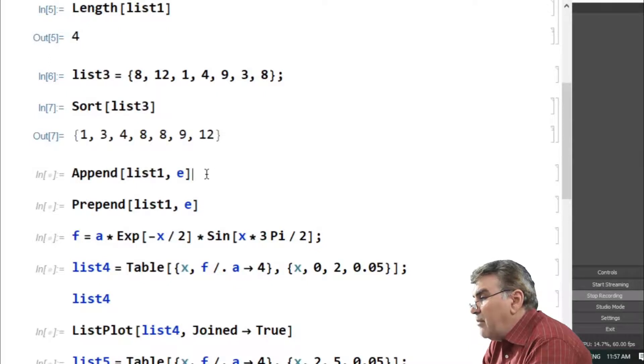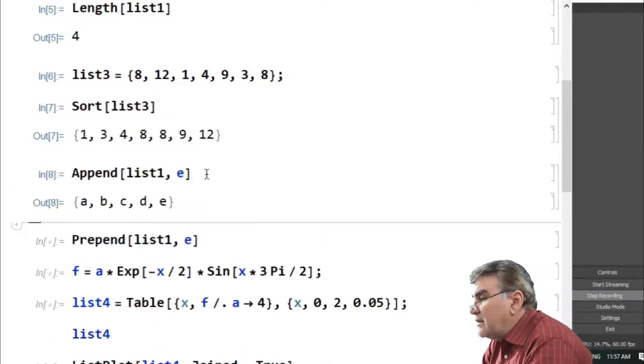If I run this out, e will be added as the last element of list1.